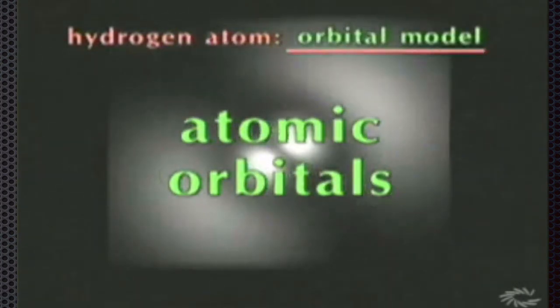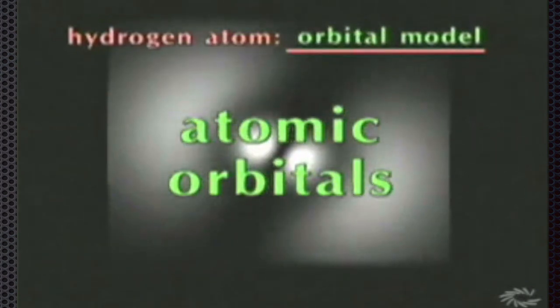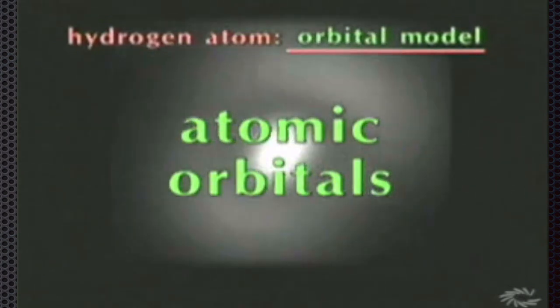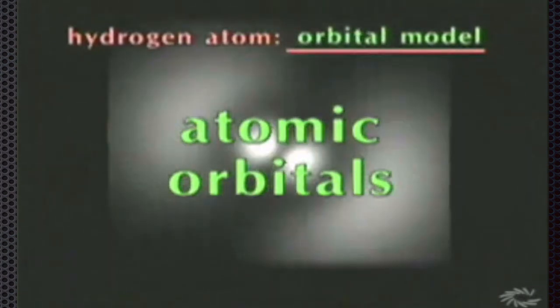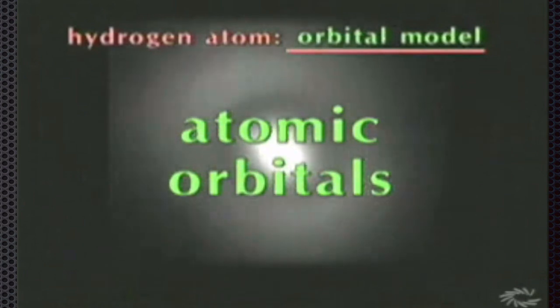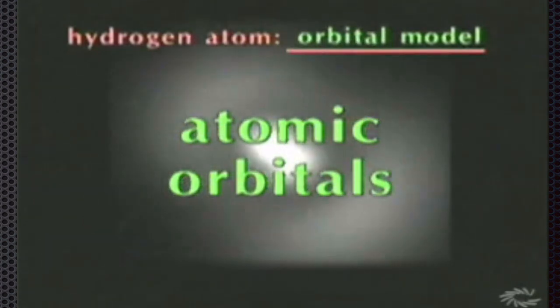Chemists picture the orbitals like clouds that are dense in areas where the electron is more likely to be, and less dense in others where there is less probability of it being found.